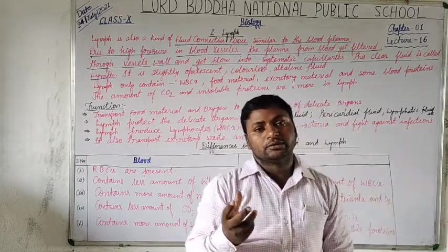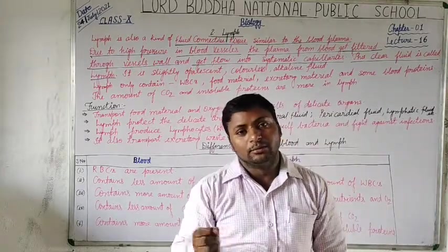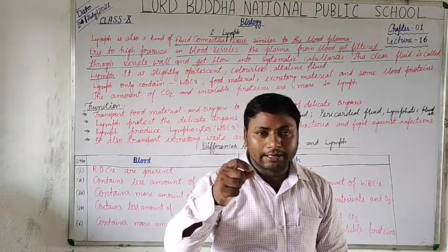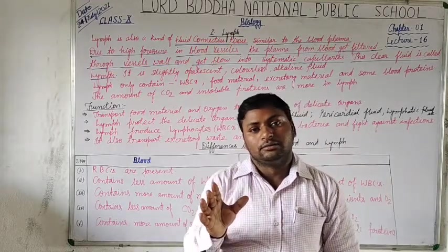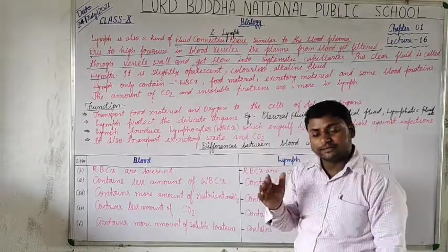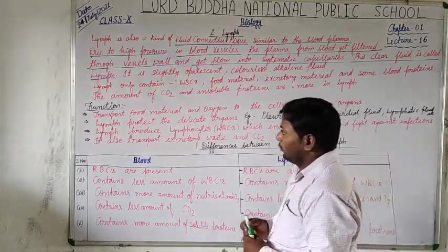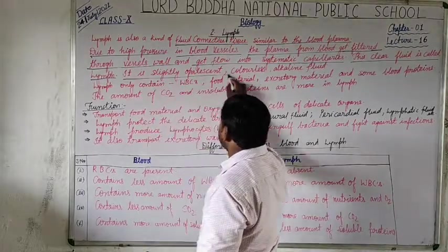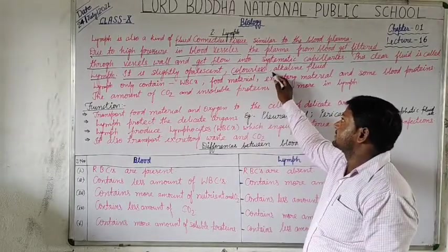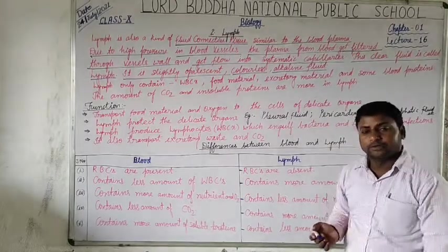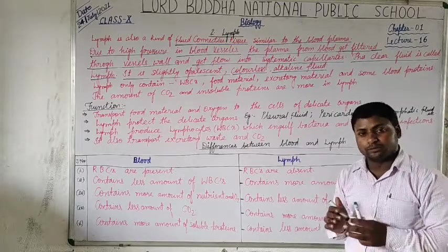The lymph is slightly opalescent, meaning light yellow in color, and is colorless and alkaline. Its pH is also similar to the blood plasma — about 7.2 to 7.4.